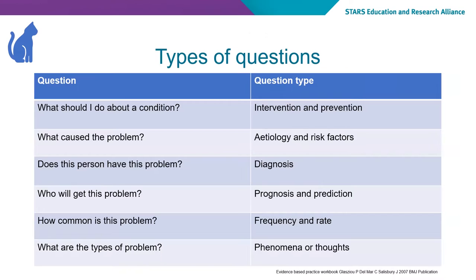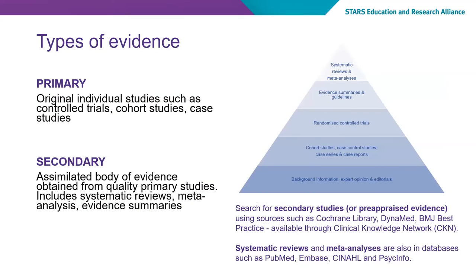For example, in a question of the effectiveness of interventions, you would look for study types that provide the highest level of evidence. In this case, you might look for a systematic review, a meta-analysis, or even a randomised controlled trial. Depending on the question, you would start looking for secondary studies — syntheses of primary studies. As this is not always available, you would look for the next highest level evidence study, such as a randomised controlled trial, a primary study.